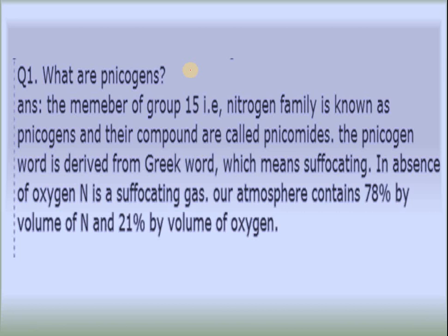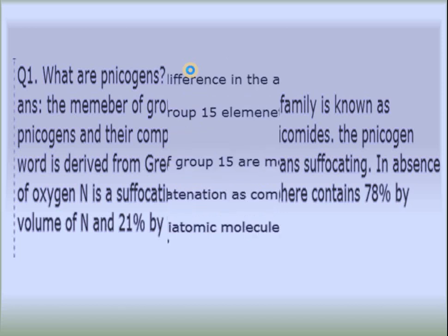The next question is: why is nitrogen called nitrogen? The word 'nitrogen' comes from the Greek word 'nitrogene', meaning suffocating. In the absence of oxygen, nitrogen in the atmosphere causes suffocation. Because of the presence of oxygen, we don't normally experience this, but if the quantity of nitrogen increases and oxygen is absent, it becomes suffocating — that is why it is called nitrogen.